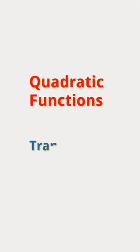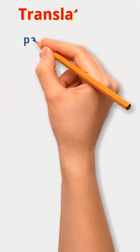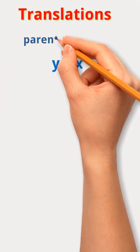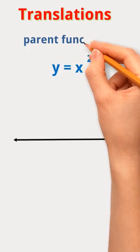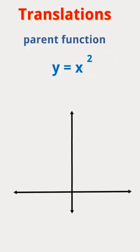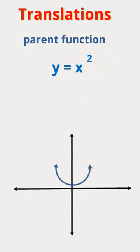Quadratic Equations — Translations. The parent graph is a parabola passing through the origin.